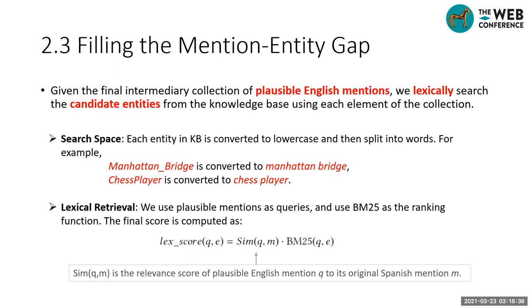With plausible English mentions, we lexically search the knowledge base and generate candidate entities. Each entity in the knowledge base is converted to lowercase and split into words. We then use the plausible English mentions as queries and apply the BM25 method to conduct a lexical search, and the top entities are returned as candidate entities.